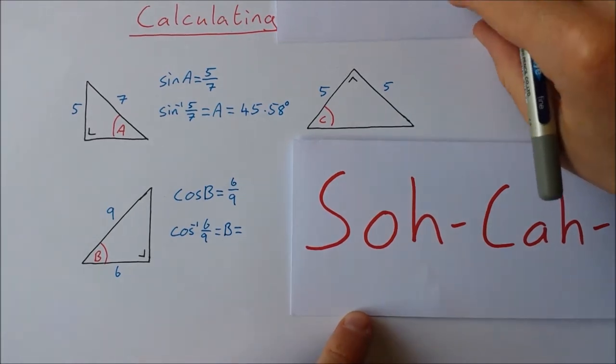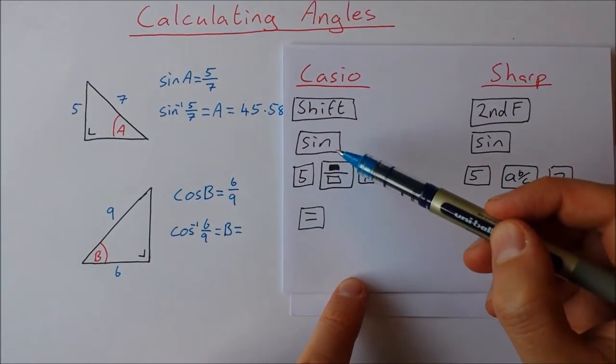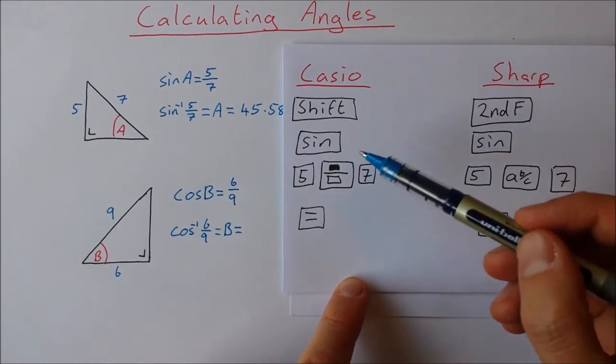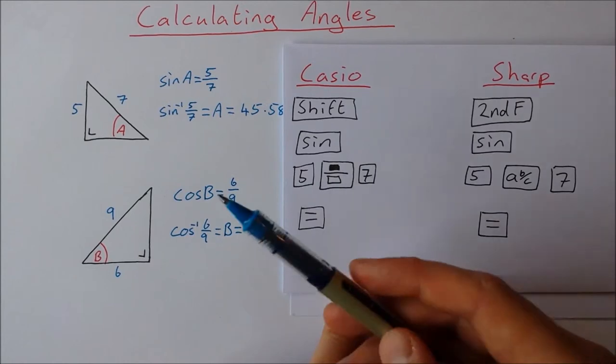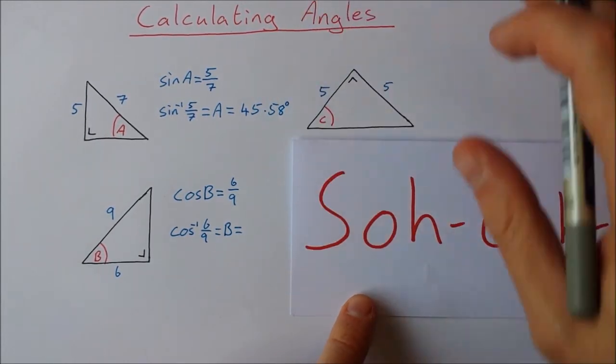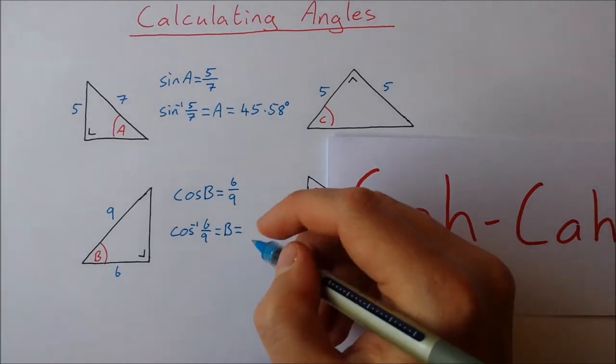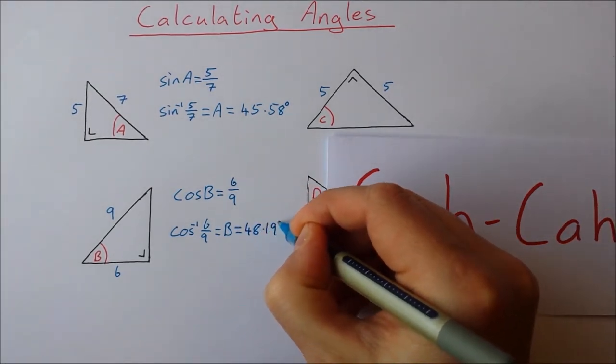Now I do the same thing except this time instead of sine I'll type in cos and instead of 5 over 7 I'm going to type in 6 over 9. So give that a go see what you get. So hopefully you should get 48.19 degrees.